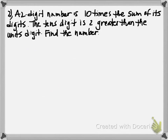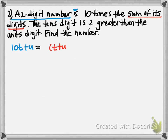Here you've got to really listen to the language. When they say 'a two-digit number is,' they're talking about its place value, so that's 10T plus U. That equals 10 times the sum of its digits — remember, sum of the digits is T plus U, and because it's a quantity we need parentheses. The second equation says the tens digit T is 2 greater than the units digit — that's a switcher phrase — so we get T equals U plus 2.